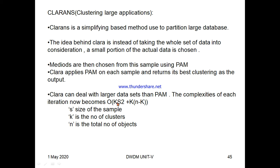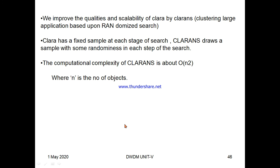The complexity formula becomes O(KS² + K(N-S)), which is the formula used for each iteration, where S is the size of the sample, K is the number of clusters, and N is the total number of objects.